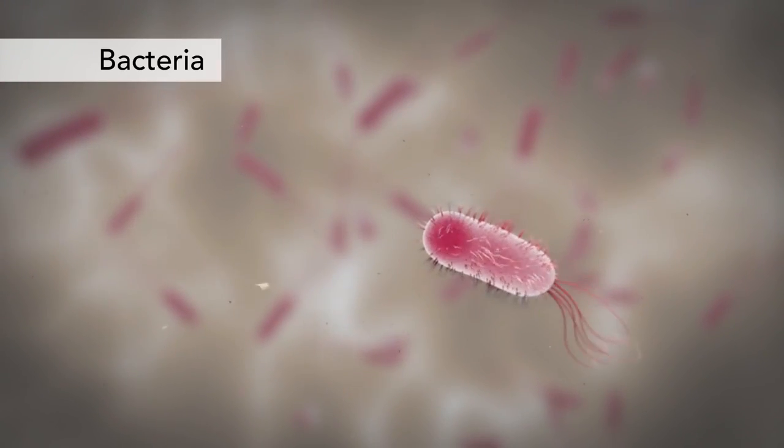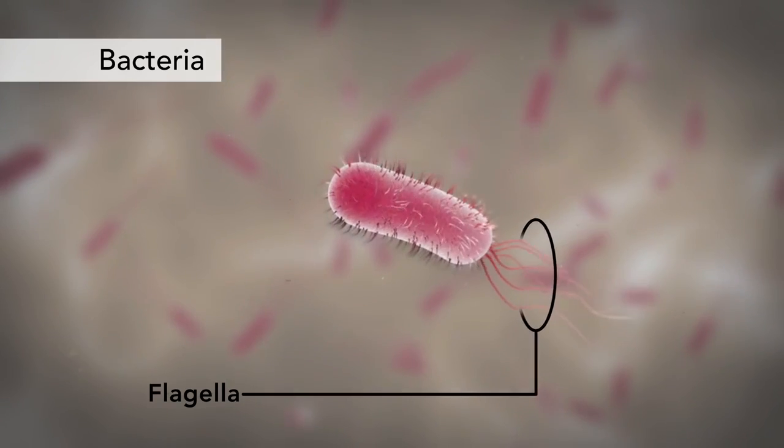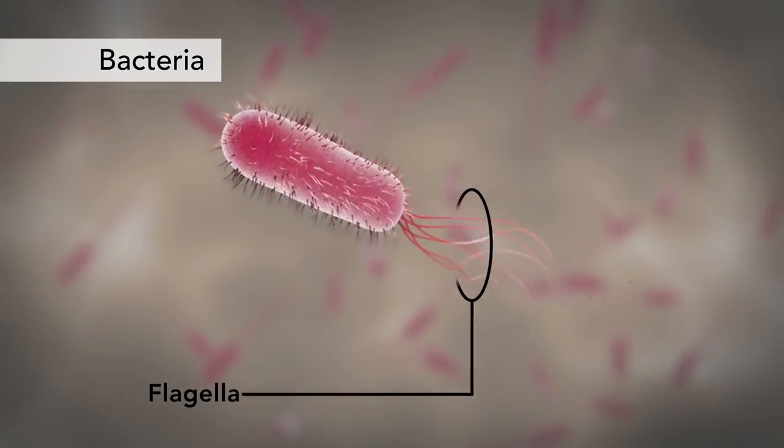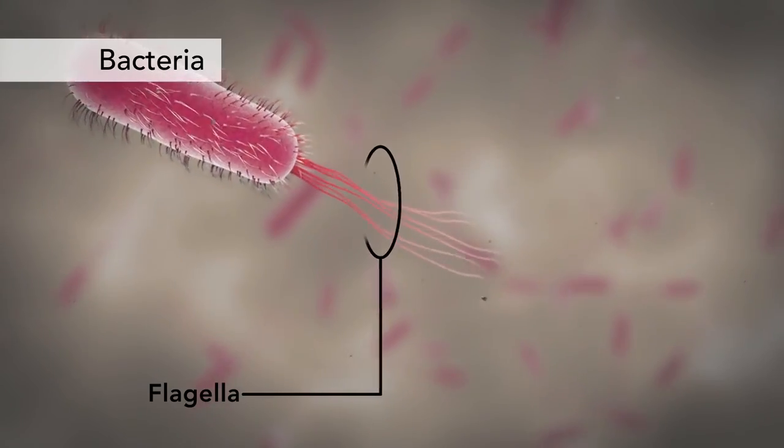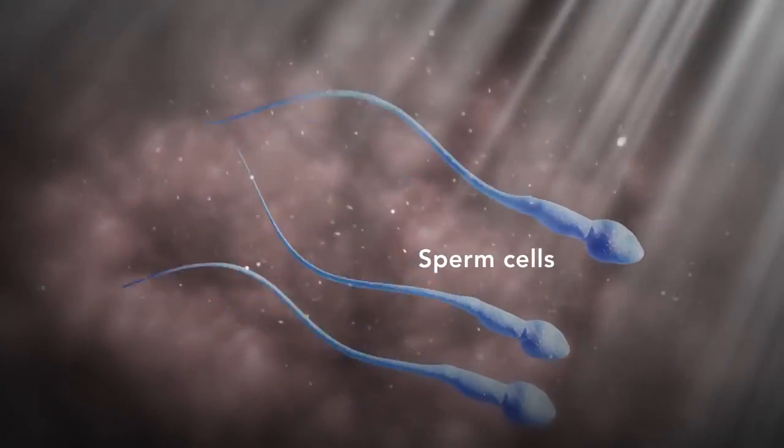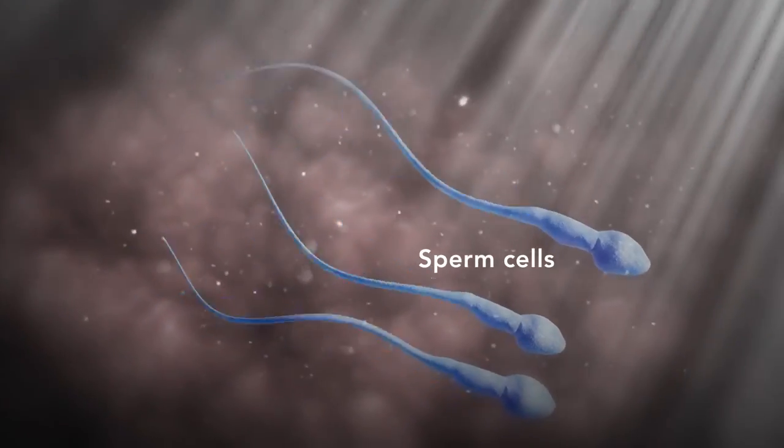Another unique feature in some cells is flagella. Some bacteria have flagella. A flagellum is like a little tail that can help a cell move or propel itself. The only human cell that has a flagellum is a sperm cell.